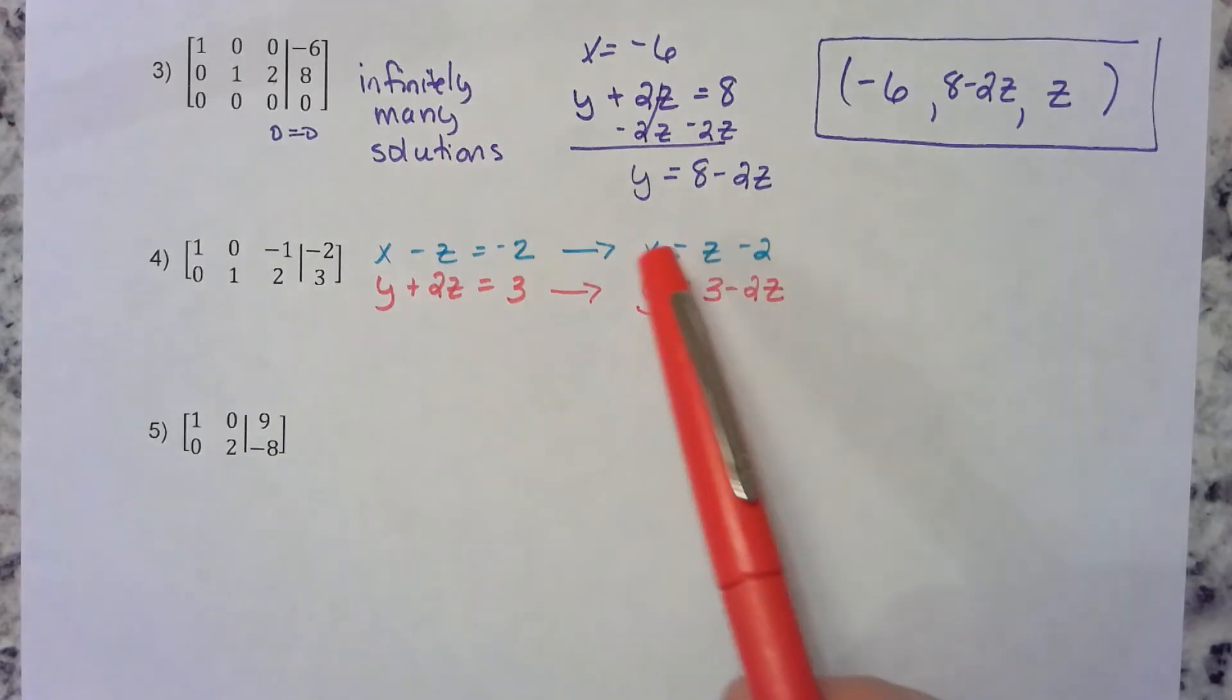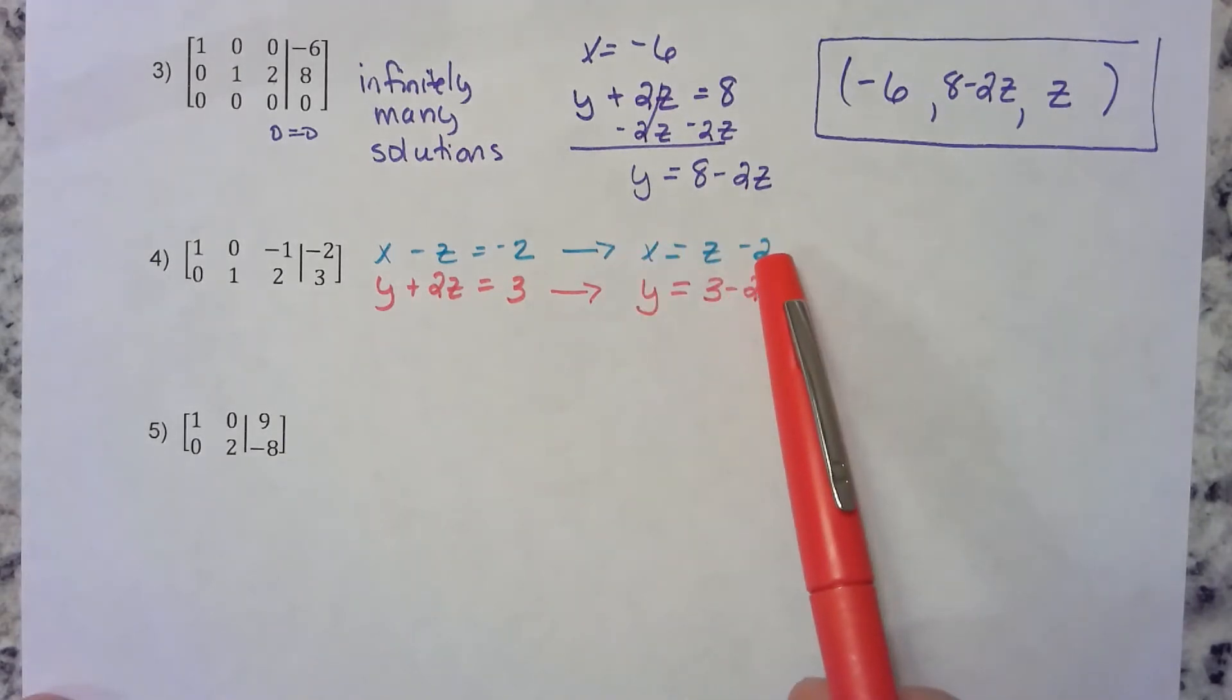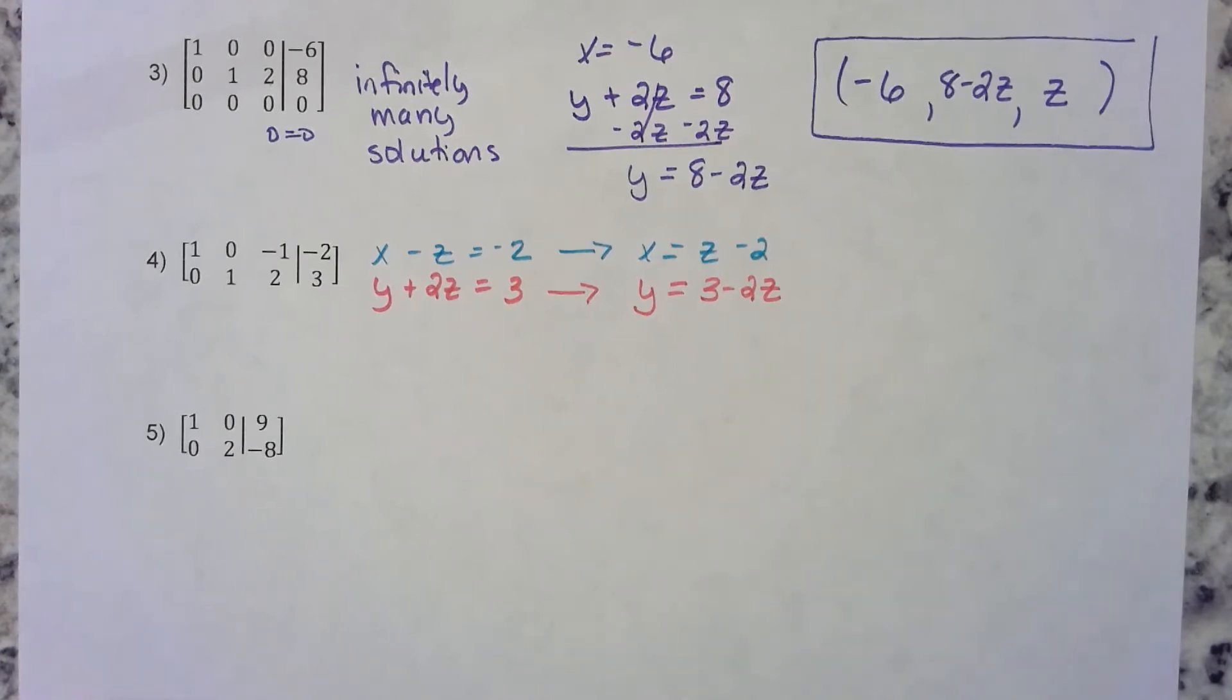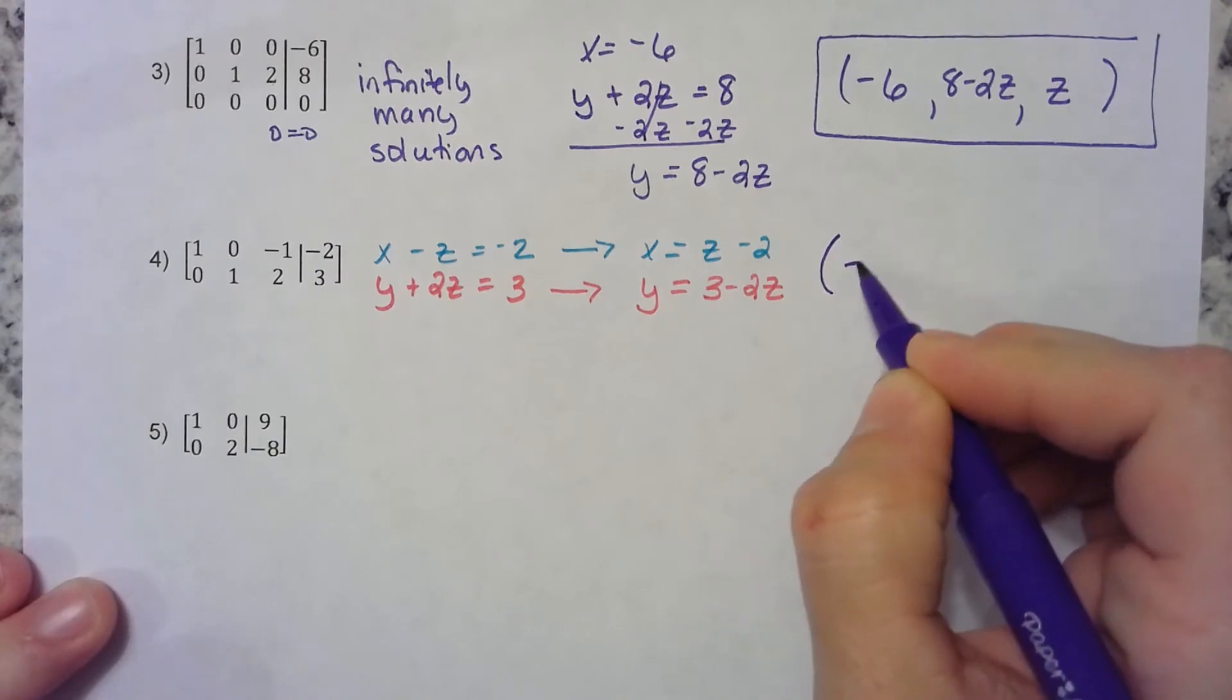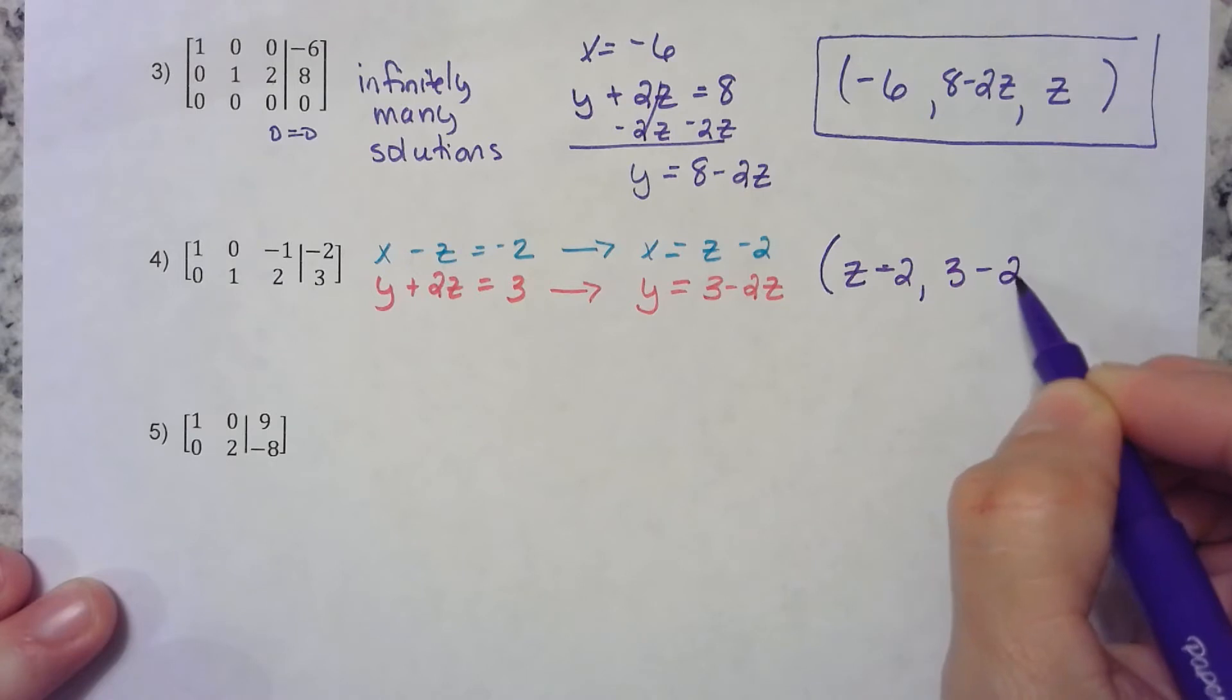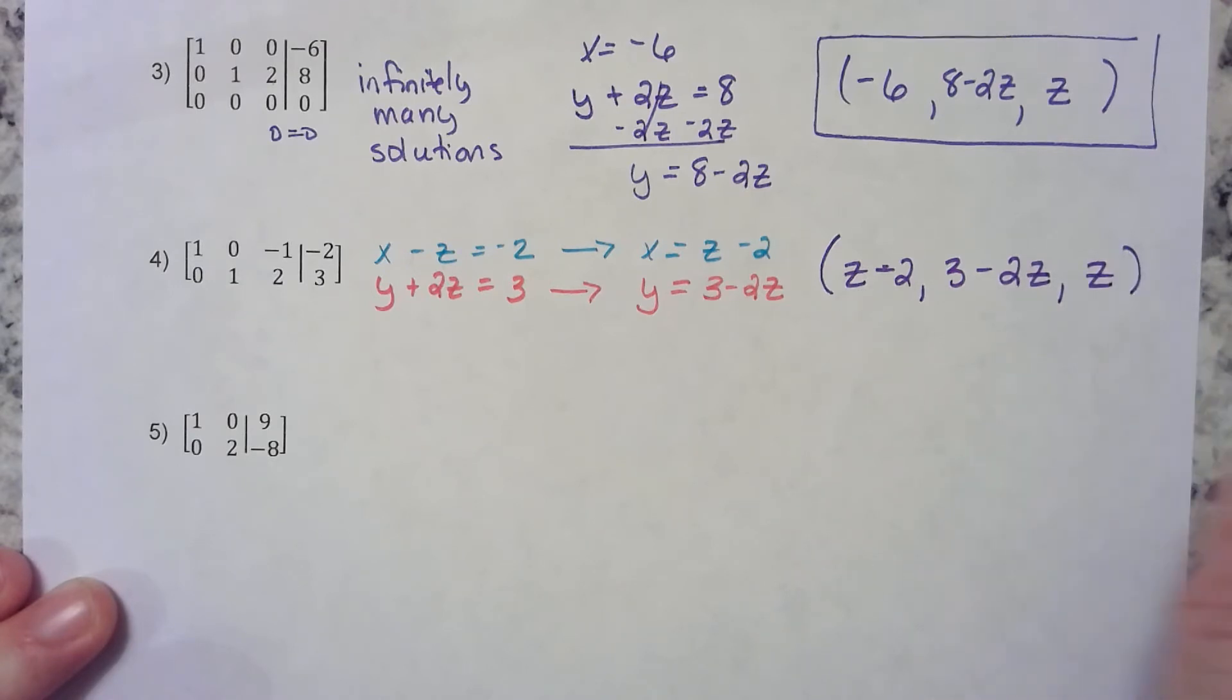We have x in terms of z and we have y in terms of z. That's going to tell us that x is z minus 2, y is 3 minus 2z. Both of these have z's, so we just need a z in the place of z.